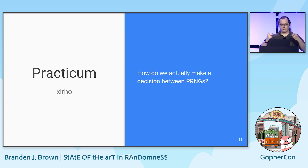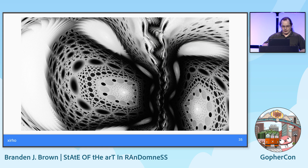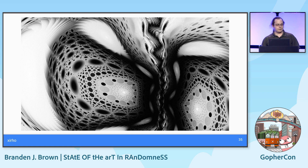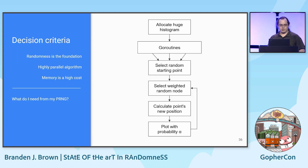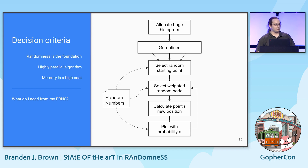Now, we've talked about the criteria and the approaches. How do we actually apply this knowledge? Here's an output from Xero — a program that I wrote in Go to start off with random numbers, do a bit of math on top, and make pretty pictures. For a program like Xero, it is possible to choose a wrong PRNG. Internally, it's surprisingly simple for what it does.